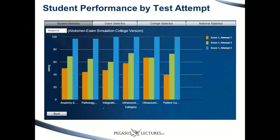This is actual anonymous student data — student B in the abdomen exam sim. The orange bar represents the first attempt, green the second, blue the third. We can see that over time the student improved significantly. Of course, some improvement is expected when seeing the same questions repeatedly, but we'll also see later that students score higher on different tests as they progress, because the process of taking practice tests helps them. You can see this analysis for each student across all selected exam attempts.